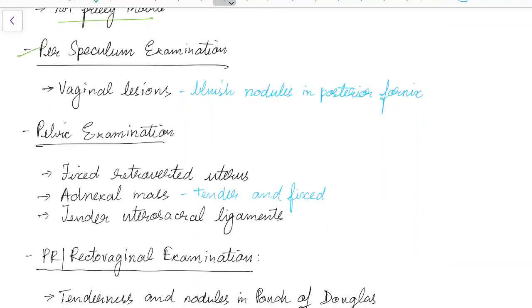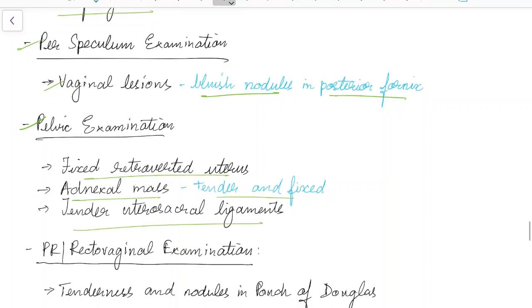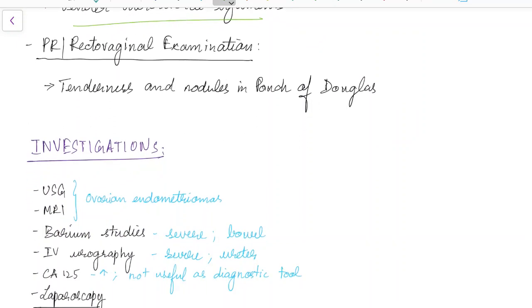On speculum examination, vaginal lesions can be seen as bluish nodules in the posterior fornix. Pelvic examination may reveal a fixed retroverted uterus, adnexal mass that may be tender and fixed, and tender uterosacral ligaments. Per-rectal or rectovaginal examination may reveal tenderness and nodules in the pouch of Douglas.